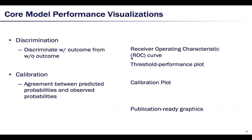To evaluate model discrimination, we provide the traditional receiver operating characteristic ROC curve and a new plot, the Threshold Performance Plot. Model calibration refers to the agreement between the predicted probabilities and observed probabilities. We provide the calibration plot as a visualization tool for model calibration.